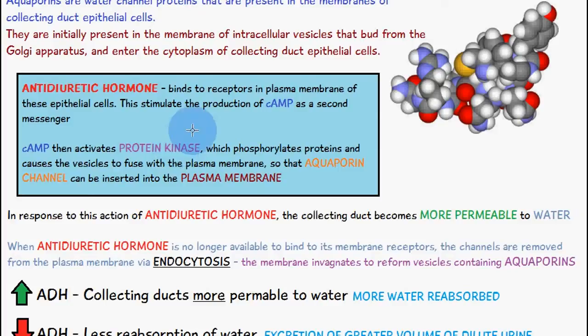Protein kinase phosphorylates proteins and causes these vesicles to fuse with the plasma membrane. This means the aquaporin channel proteins are inserted into the plasma membrane, so water can be removed from the fluid in the collecting duct into the surrounding interstitial fluid and taken away by the peritubular capillaries.